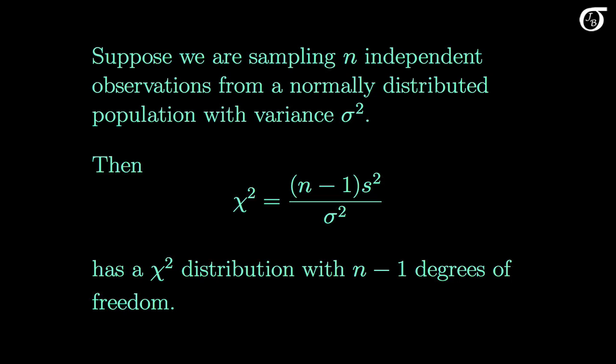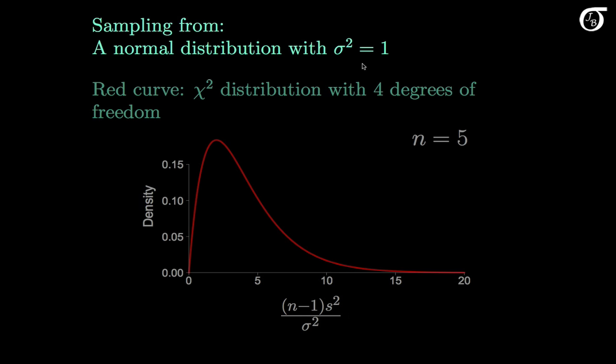Now let's see what the sampling distribution of the sample variance looks like in a few different scenarios. We'll start off with sampling from a normal distribution. Let's sample from a normally distributed population with sigma squared equal to 1. For simplicity I'm fixing sigma squared at 1 here, but the situation would be very similar for any value of sigma squared.